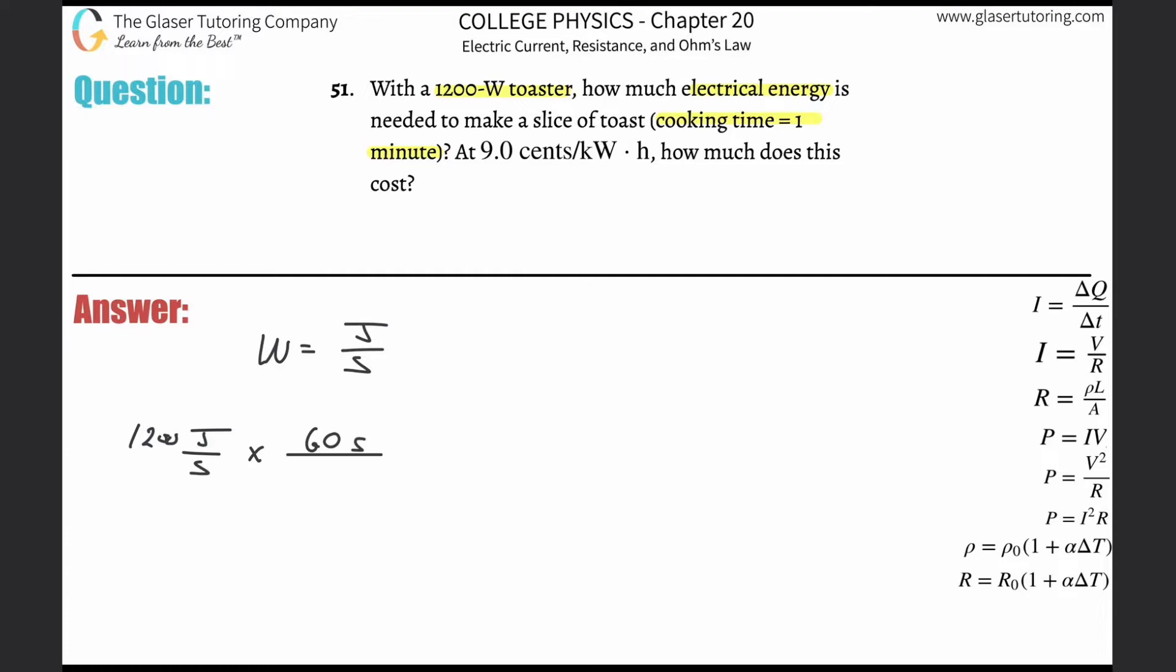If you wanted to do this technically, you would have done seconds on the top, minutes on the bottom. There's 60 seconds in a minute and then you want to run this thing for one minute. Here's how the units would have canceled: minutes go bye-bye, seconds go bye-bye, and we're left with the same thing. So we're going to take the 1200 and multiply it by 60, so we realize that there's going to be 72,000 joules being utilized to cook this piece of toast.